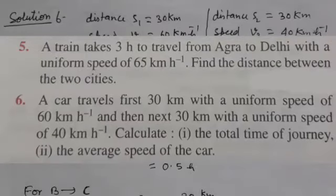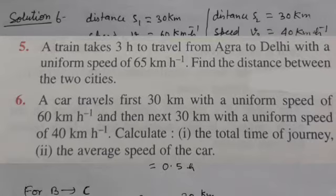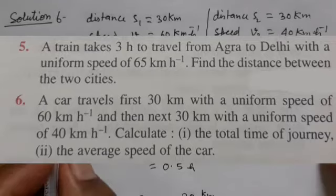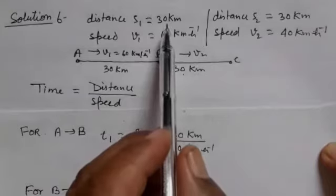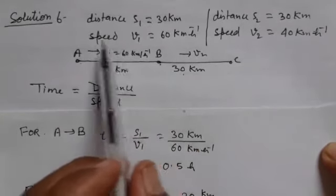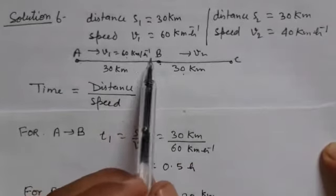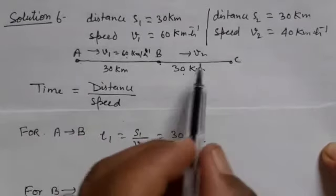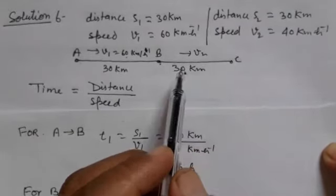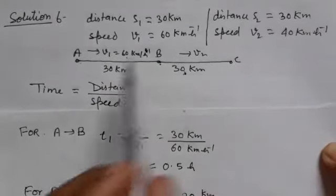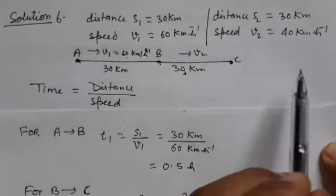Question number 6: A car travels first 30 km with a uniform speed of 60 km per hour, and then next 30 km with a uniform speed of 40 km per hour. Calculate the total time of the journey and the average speed of the car. For the solution, A to B distance is 30 km at 60 km per hour, and B to C is 30 km at 40 km per hour.